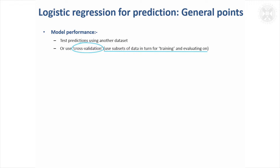So it can be a bit deceptive if you were to put a vast number of variables in and you've got almost perfect predictions — you might think your model's doing really well, but you put it on another data set, it may not do anything like as well because you've got overfitting.